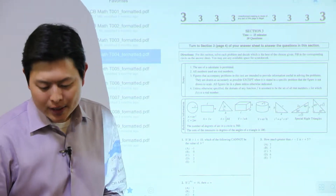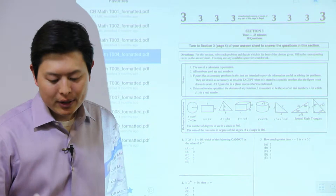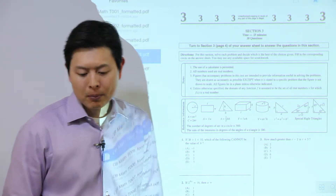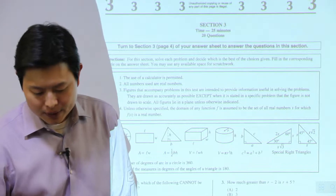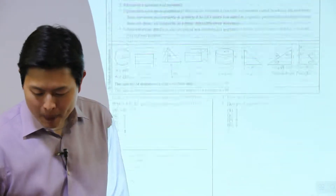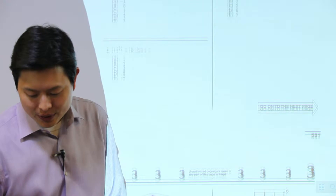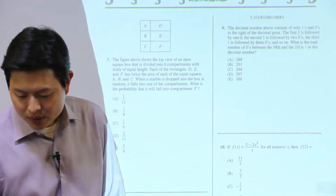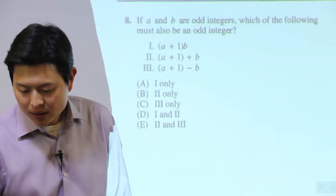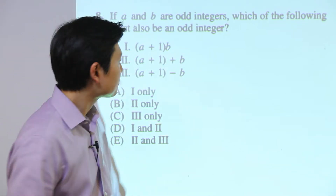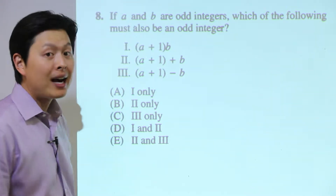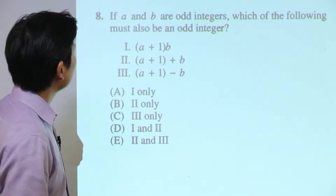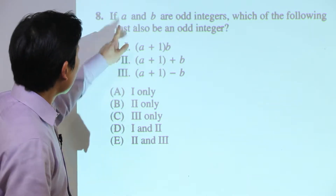The first problem is from test number four in your official College Board study guides — test four, section three, number eight. The question states: if a and b are odd integers, which of the following must also be an odd integer?